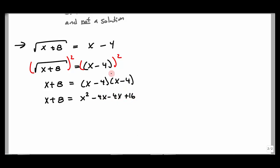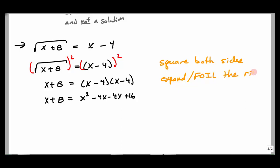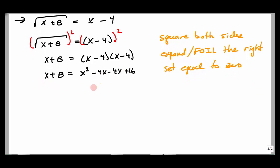FOILing out the right-hand side gives x² − 4x − 4x + 16. My goal is to get this set equal to 0 — so I square both sides first, then expand the right by FOILing. Moving the x and the 8 across by subtracting: x² − 4x − 4x + 16 − x − 8 = 0.